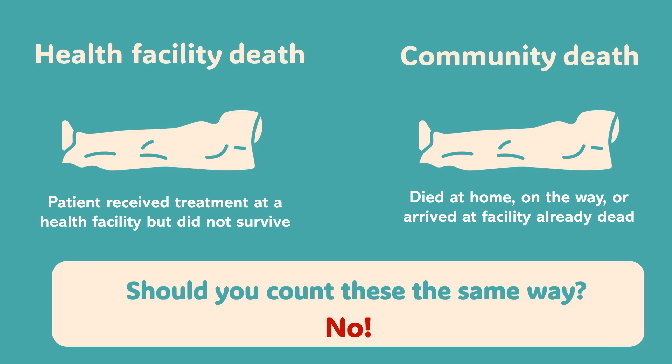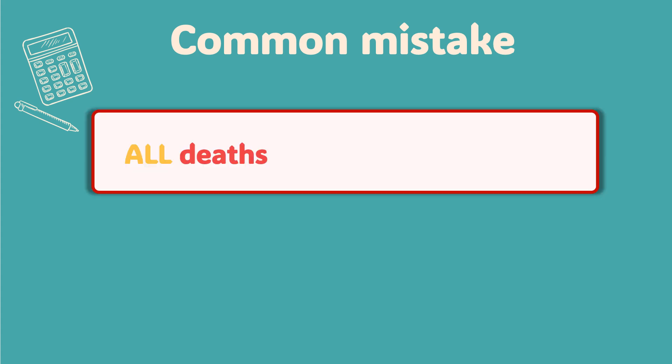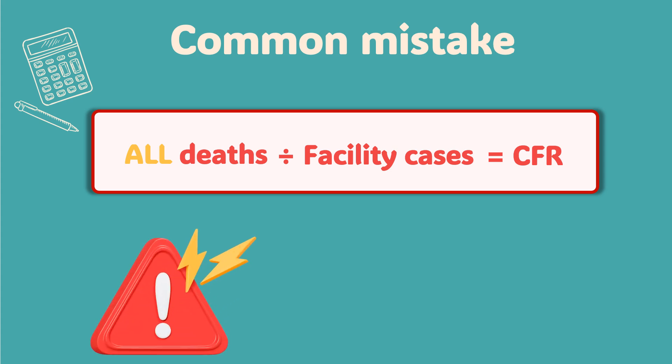The answer is no. Many cholera surveillance systems make the same mistake. You take all the deaths you know about — the person who died at the health facility and the person who died in the community — and you lump them together. Then you divide that total by the number of sick people who showed up at health facilities. What you get is the case fatality ratio, or CFR. Do you see the problem? You've added community deaths to the numerator, but you completely forgot to add community cases to the denominator. And this is where the massive bias problem comes in.